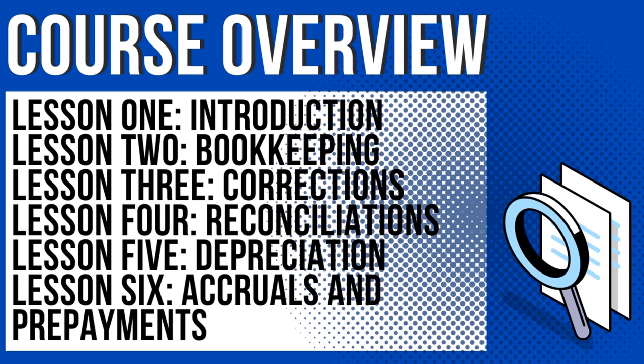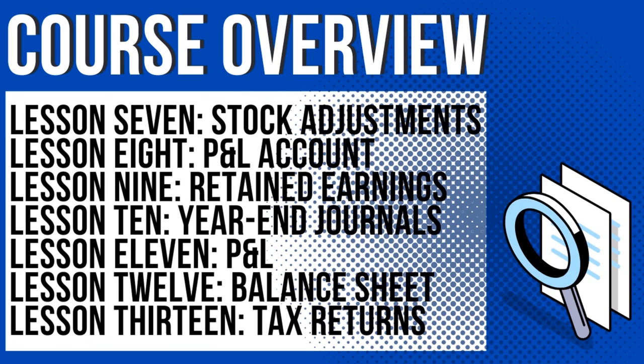Hopefully I'm giving this justice and hopefully you're as excited as me. Lesson seven: stock adjustments. Not all financial accounts need stock adjustments, but if the entity holds stock and sells products, there will be stock adjustments that need to be done. Lesson eight: the profit and loss account — not the profit and loss statement. This is where we keep track of dividends, retained earnings, and the accumulated profit or loss for the entity.